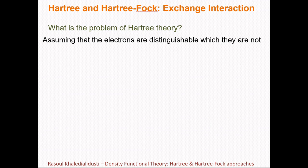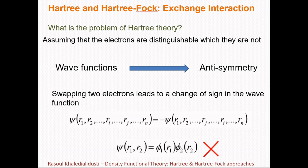Now I'm going to talk about the problem of Hartree theory, which assumes electrons are distinguishable — which they are not. Based on Hartree theory, for example, electron one is for orbital one and electron two is for orbital two. However, we do not exactly know which electron belongs to which orbital. This is the main problem of Hartree theory. As we know, wave functions are anti-symmetric, so swapping two electrons leads to a change of sign in the wave function, but Hartree theory does not take this principle into account.